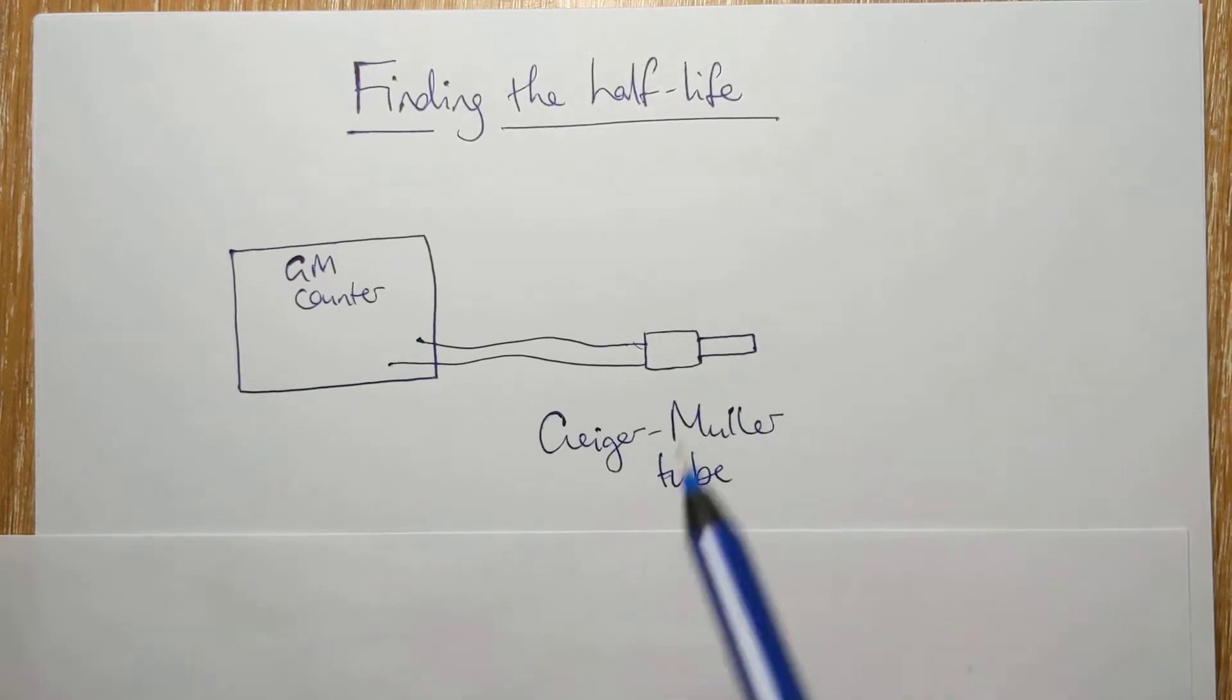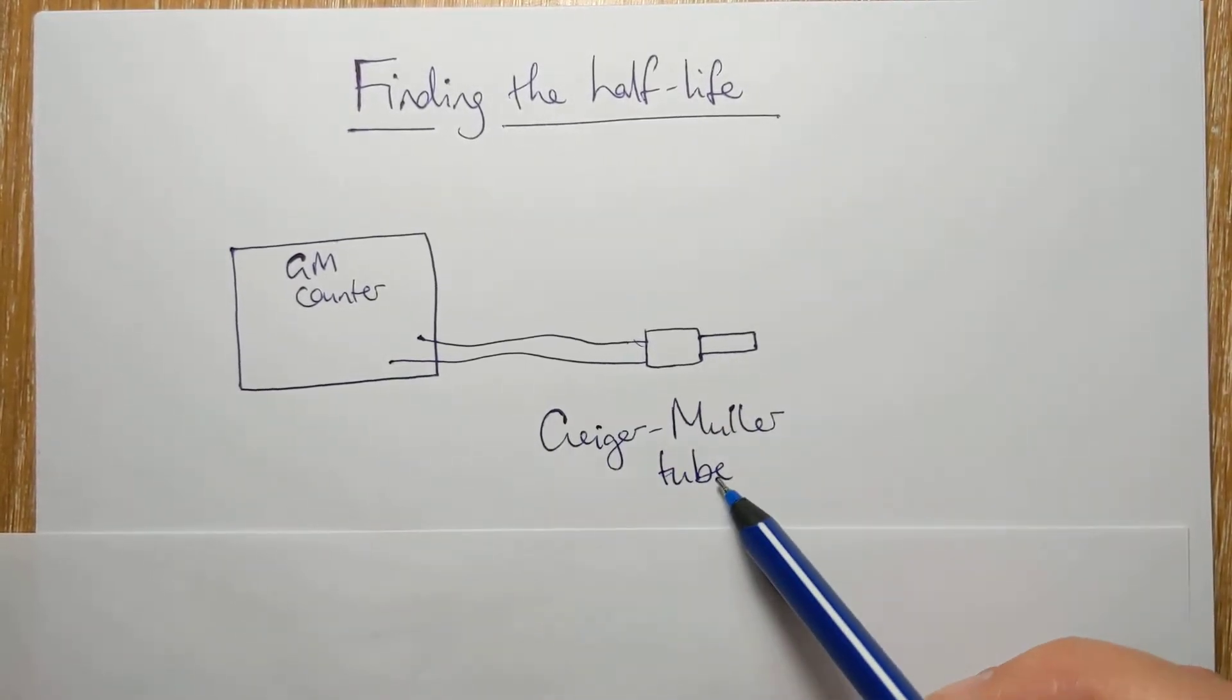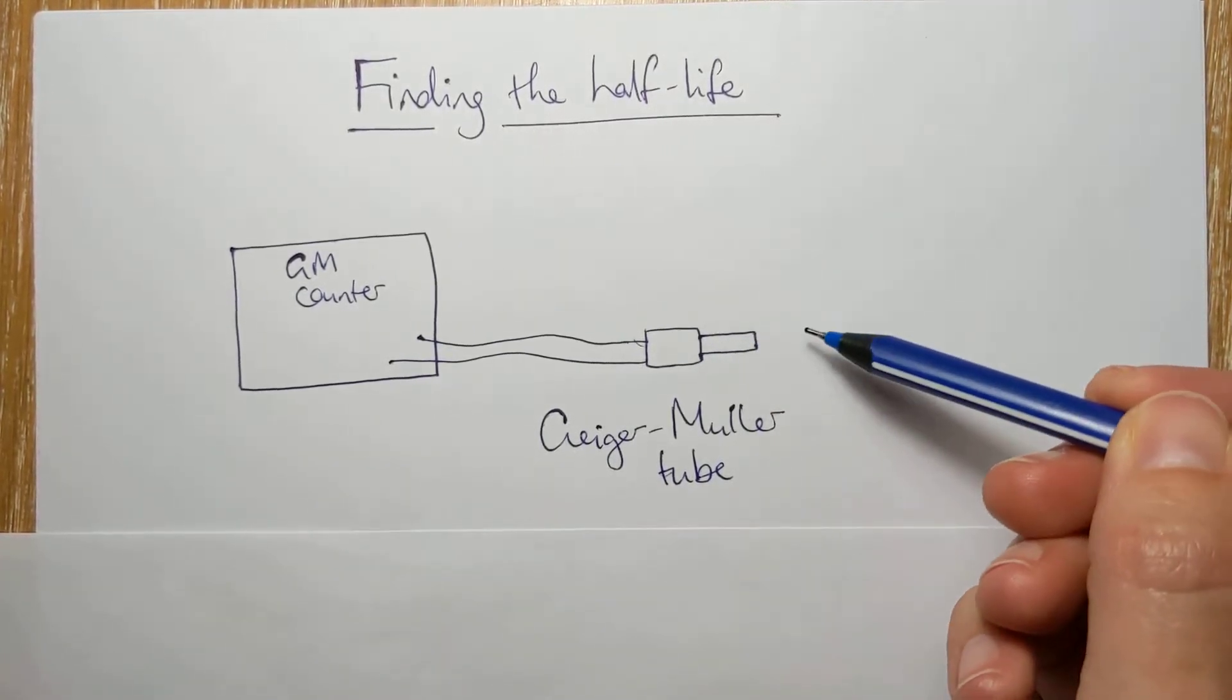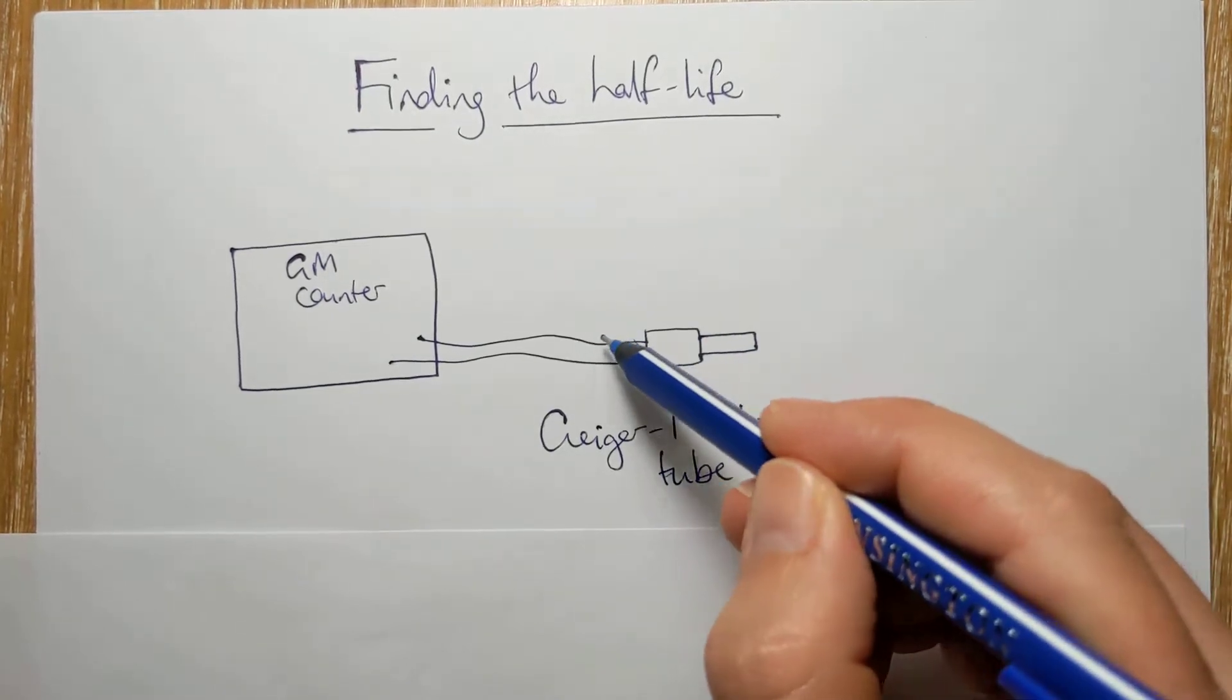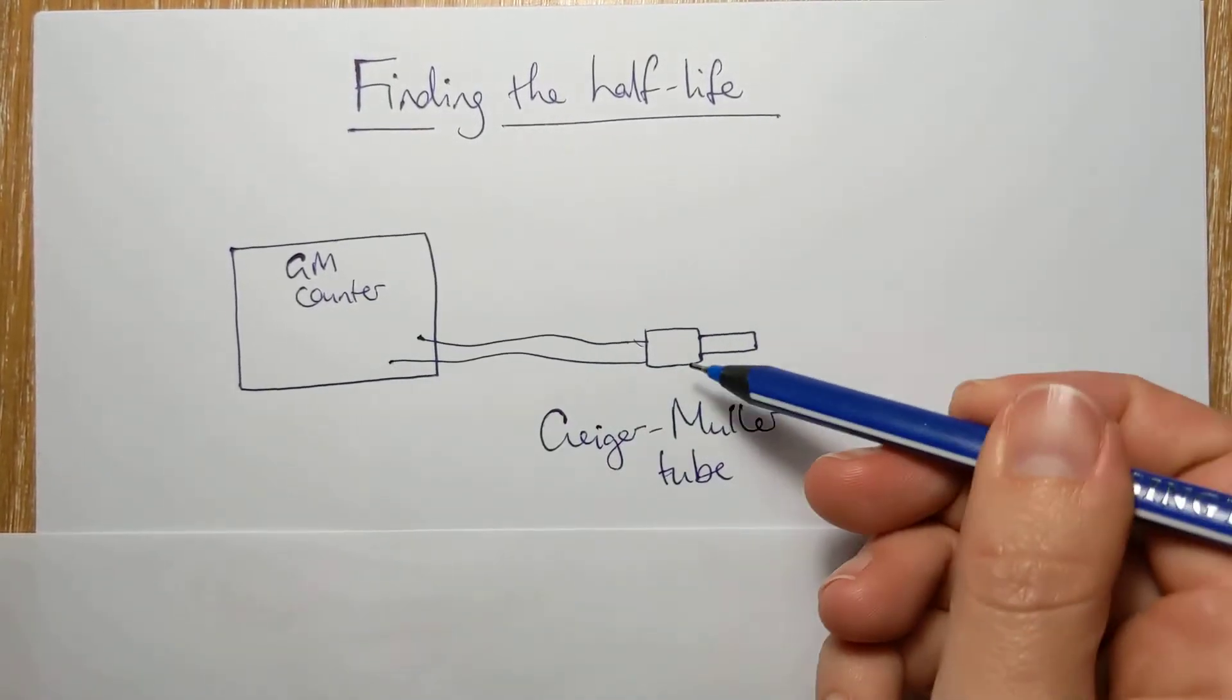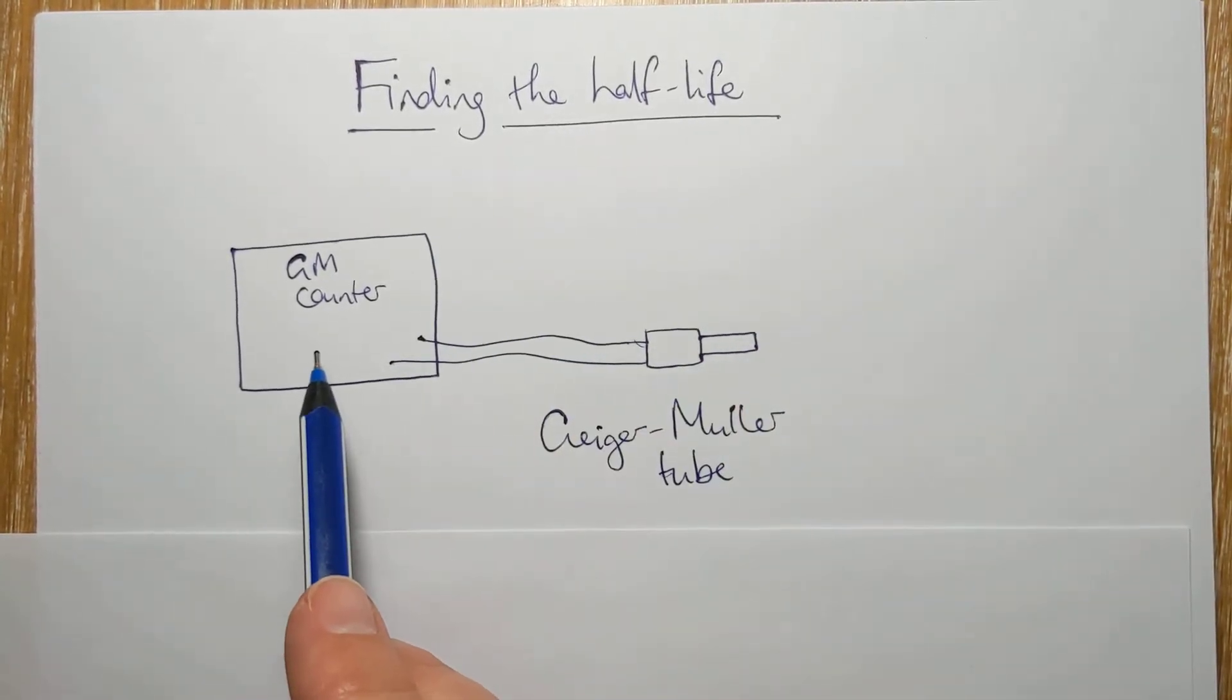Your detector is the Geiger-Müller tube, named after Geiger and Muller from a previous video. When alpha, beta, gamma, or positrons enter here, they cause a signal to be sent to the counter which counts them. It doesn't matter what kind of ionizing particle hits there, they all just get counted the same.